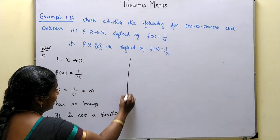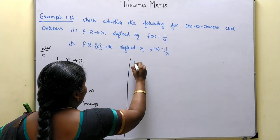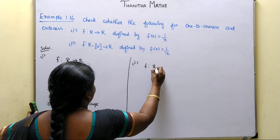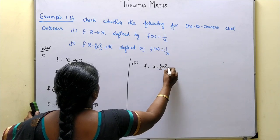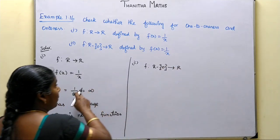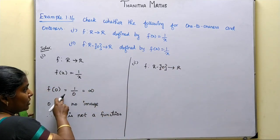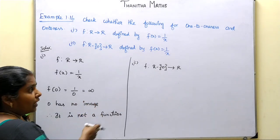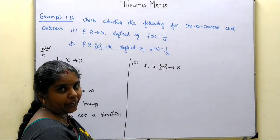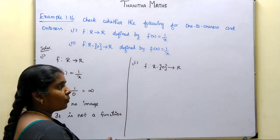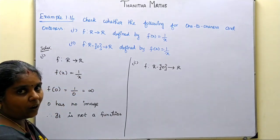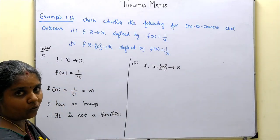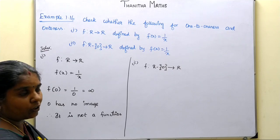For the second question, the function is from real numbers excluding 0 — so that is the domain. We remove 0 from the domain. Now 1 maps to 1 by 1 which is 1, 2 maps to 1 by 2, and 3 maps to 1 by 3. So there is a mapping for each element.